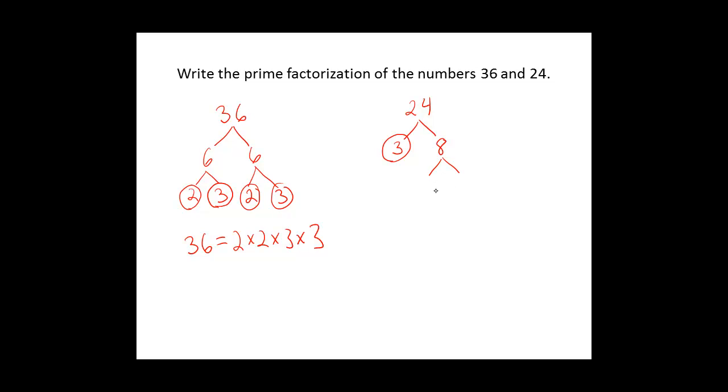We can break 8 into 2 times 4. 2 is a prime number, so we'll circle that and break the 4 into 2 times 2. And 2 is prime, so we circle the 2's and we circle the 3. So the prime factorization of 24 is equal to 2 times 2 times 2 times 3.